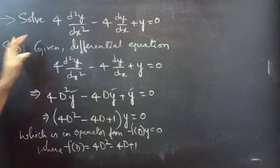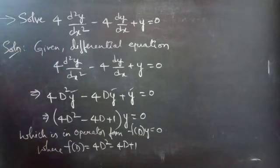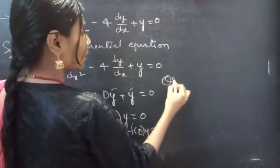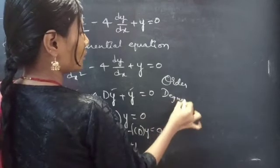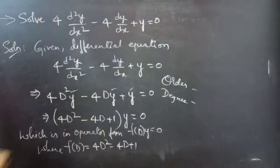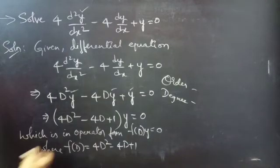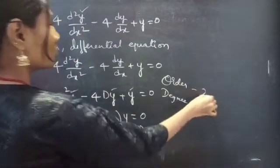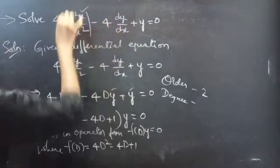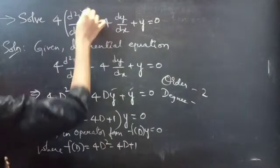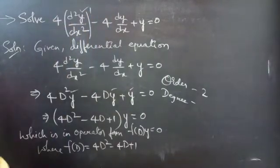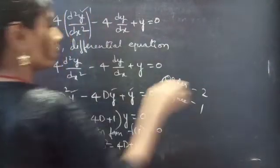We are going to find the general solution using the auxiliary equation. Here, what is the order and degree of the given differential equation? The highest derivative is d²y/dx², so the order will be 2. The highest power of that derivative is 1, so the degree will be 1.